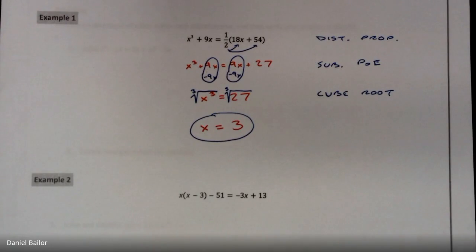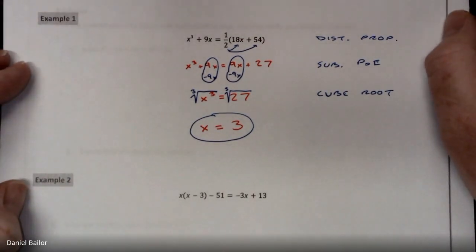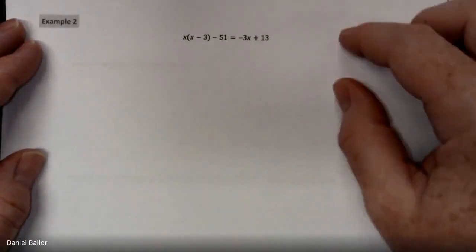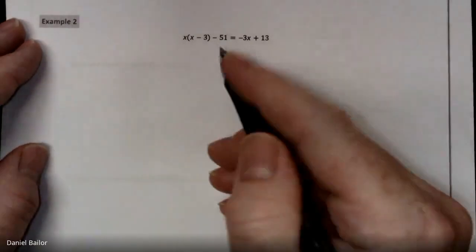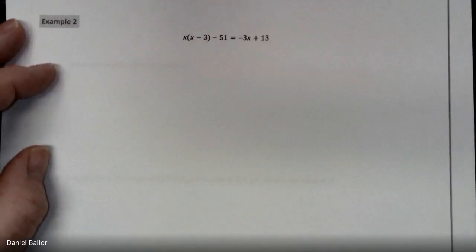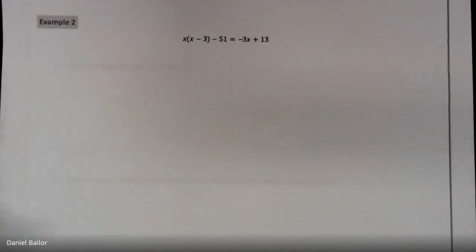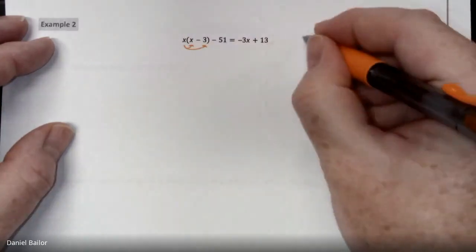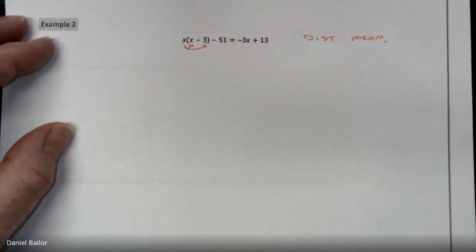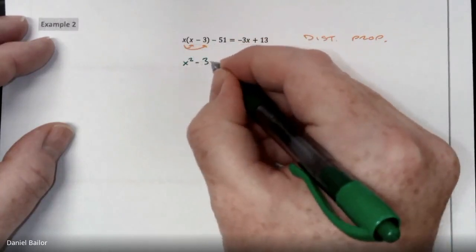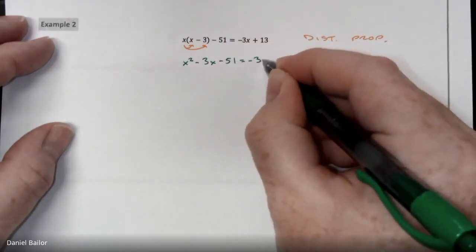Let me show you one more time with Example 2. We have: x times the quantity (x minus 3) minus 51 equals negative 3x plus 13. I see a number outside parentheses, so I'll use the distributive property again to pass the x inside. x times x is x squared, minus 3 times x is negative 3x. Nothing happens to the minus 51, and the right side stays the same.